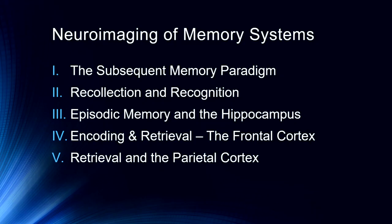Here's the agenda for this lecture. We're going to first talk about what we call the subsequent memory paradigm — I introduced this early on in the series when discussing methodology for cognitive neuroscience. Then I want to introduce some concepts in recollection and recognition memory, talk about episodic memory in the hippocampus, focus on the frontal lobes and encoding and retrieval, and finally finish with encoding and retrieval across the parietal cortex.